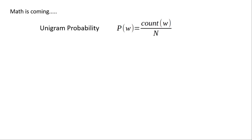Now let's actually see the math behind building a language model using these n-grams. First, to calculate a unigram probability — that is, what is the probability of a word? A unigram is basically just a single word. So what is the probability of a word coming from the entire corpus? N represents the number of words in your entire corpus, and w can be any word. So the probability of that word is basically the unigram probability.